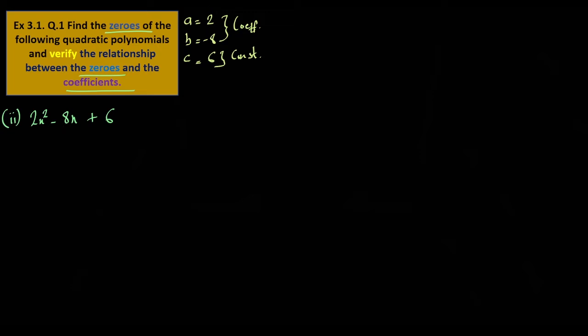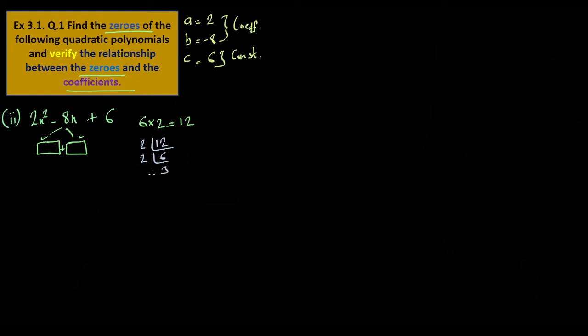The zeros can split. 8 can split 6 into 2. We need 6 into 2, giving us 12. Using prime factorization method: 12, 6 into 2, 12.